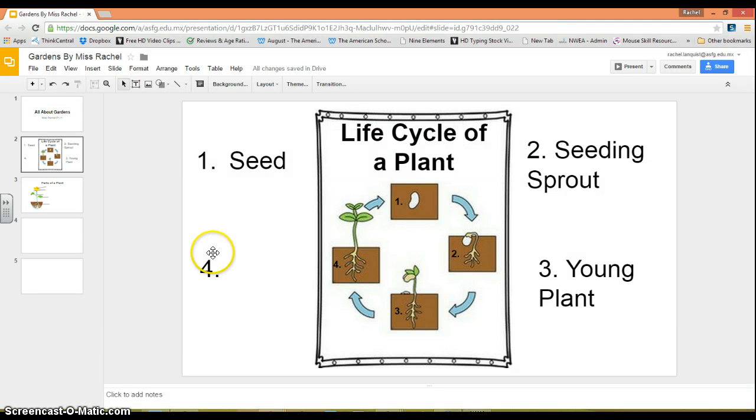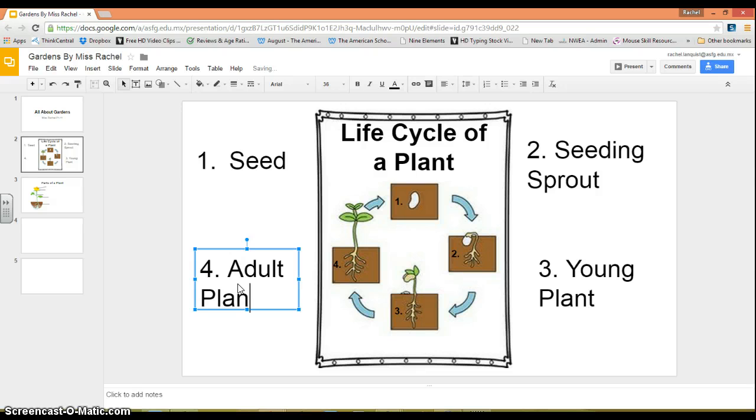The last one we're going to go to is number four. So here is number four in our life cycle. We've gone around the life cycle. So I'm going to click next to number four, and I'm going to write adult plant.